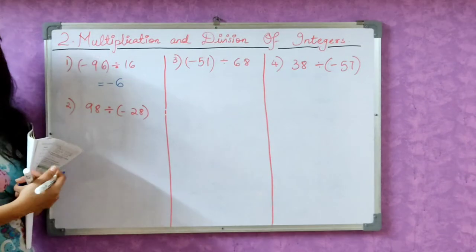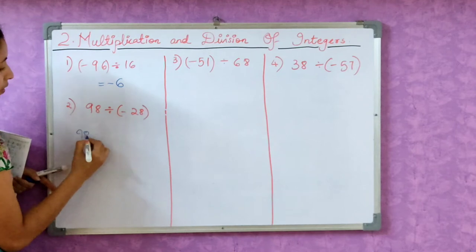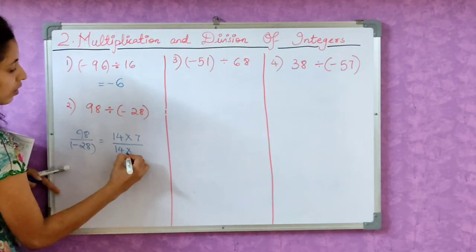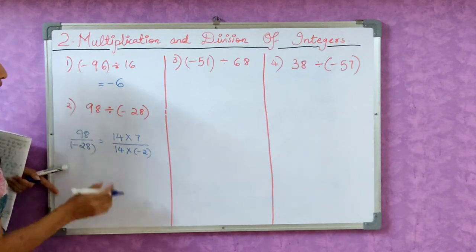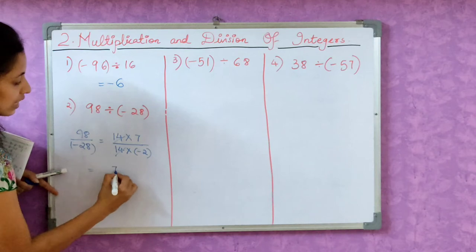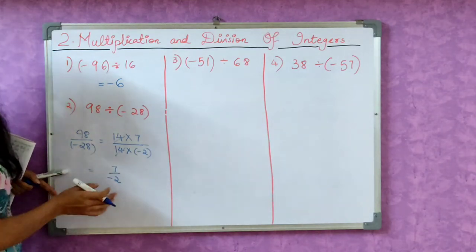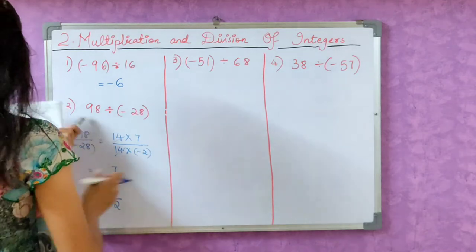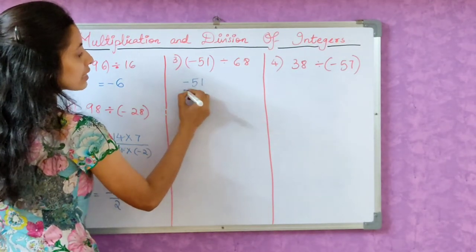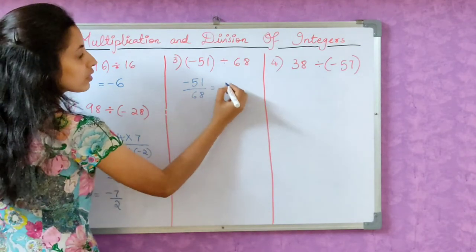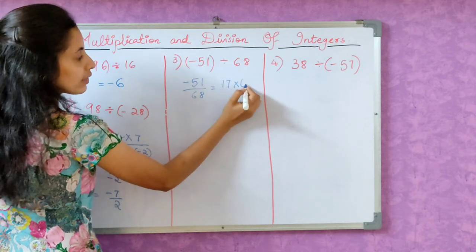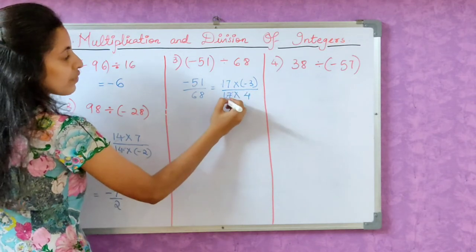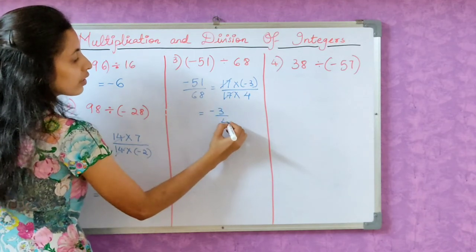Now we have another one. 98 by 28. These both come in 14 in the table. So now we have 14 terms. 98 divided by minus 28. 14 sevens are 98, and 14 minus twos are 28. We have minus sign here. Now 14 cancels. So what is it going to be? 7 by minus 2. We cannot keep the minus sign in the denominator. So what is our answer? Minus 7 by 2. Now let's move on to the third one. Minus 51 by 68. These both are also on 17, right? So 17 into 3 is 51, 17 into 4 is 68. 17 gets cancelled. What remains? Minus 3 by 4, and that is our answer.